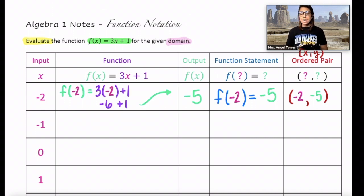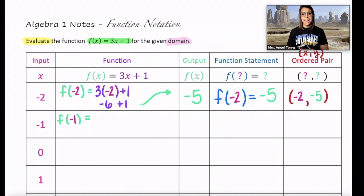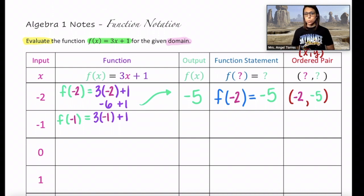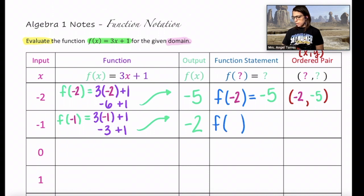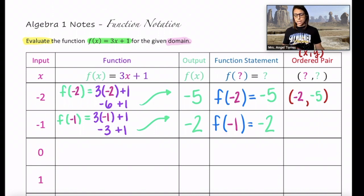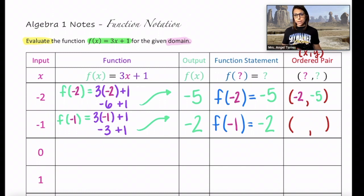Let's try another input: negative 1. Starting with our function notation, f of negative 1 equals, and then we substitute negative 1 into the function: 3 times negative 1 plus 1. Let's simplify. 3 times negative 1 is negative 3. Negative 3 plus 1 is negative 2. So we've found another input-output pair. Our function statement: f of negative 1 equals negative 2. For our ordered pair, open up your parentheses — our input was negative 1 and our output was negative 2, giving us (negative 1, negative 2).